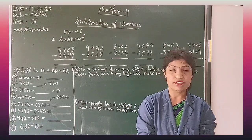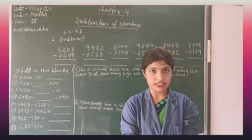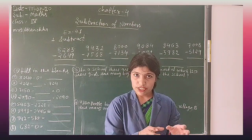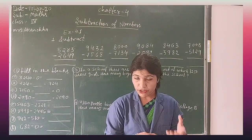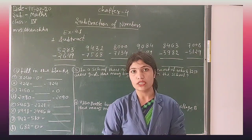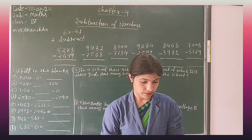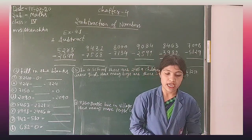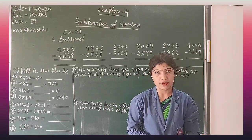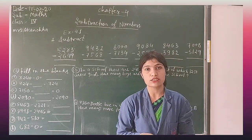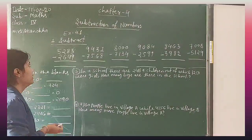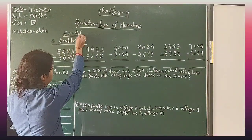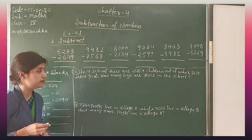The number from which we subtract is called the minuend, and the number which is subtracted is called the subtrahend. The answer which we get after the subtraction procedure is called the difference. Let's start Exercise 4.1 on subtraction.